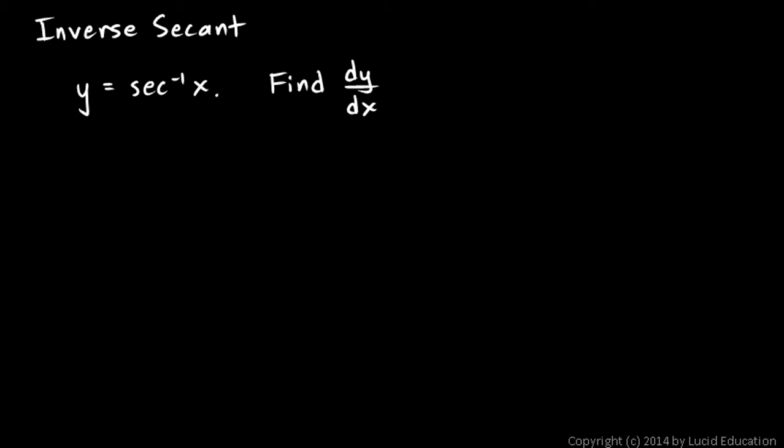Now we'll differentiate the inverse secant function, and this one's a little bit trickier. So here's the problem: y is the inverse secant of x. Find the derivative.